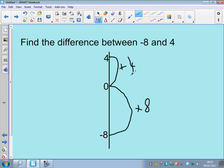So, you've added on 8 to get to 0, and then you've added on another 4. So, the difference is 8 and the 4, which means the difference is 12.